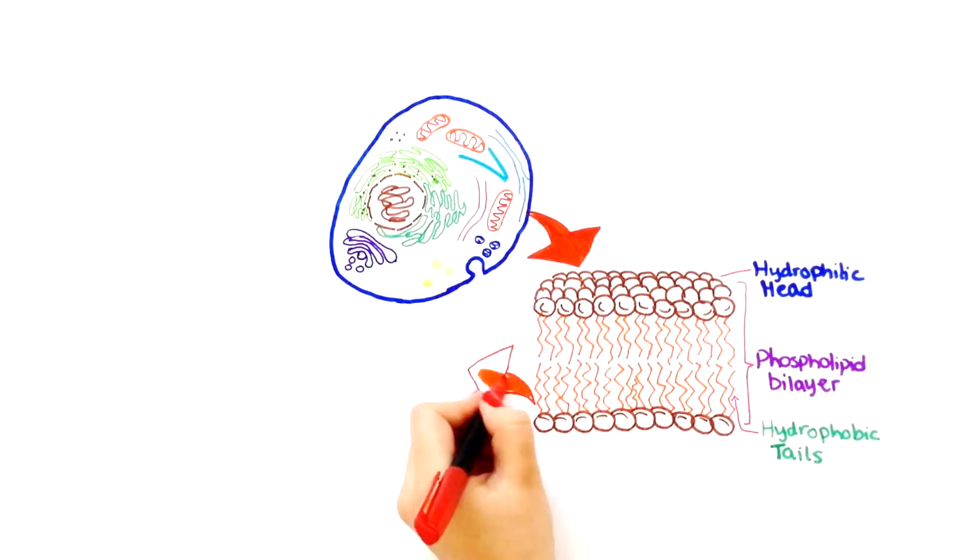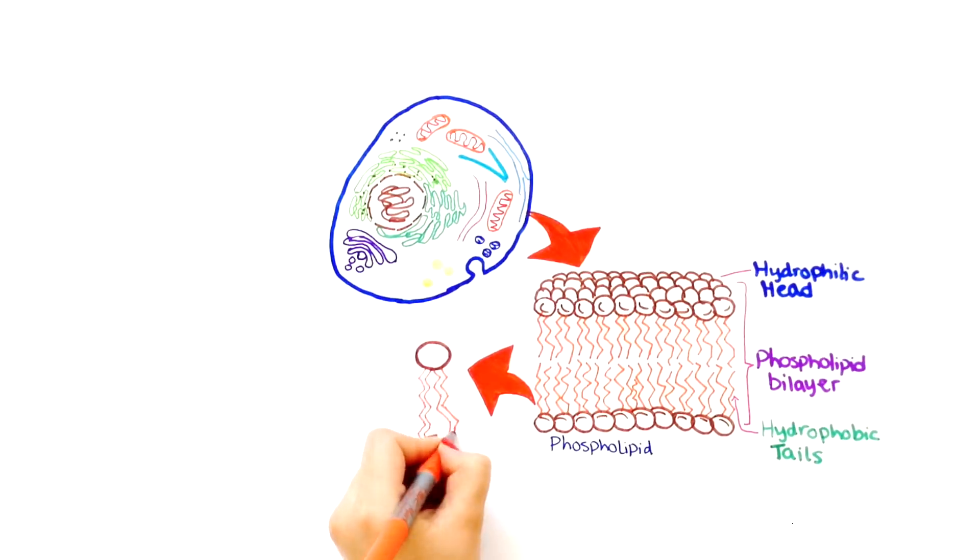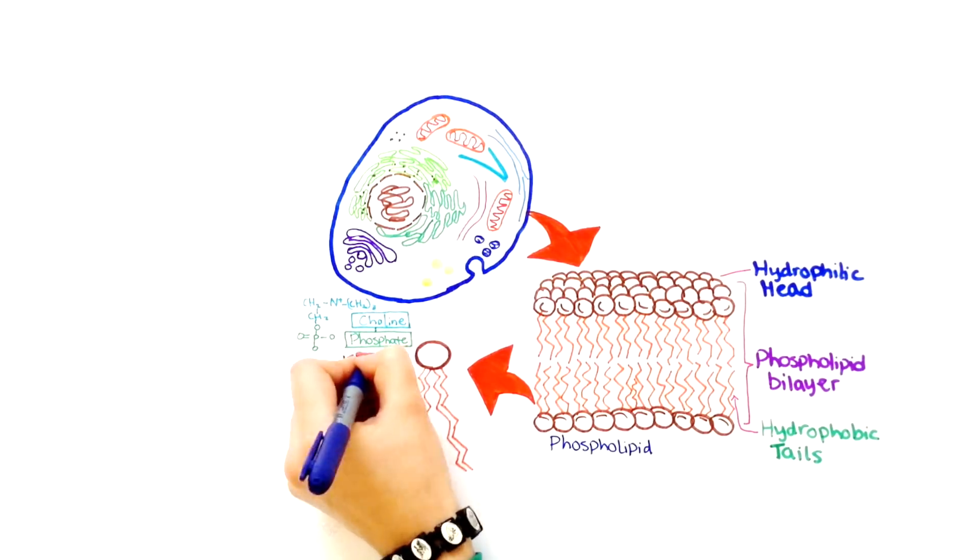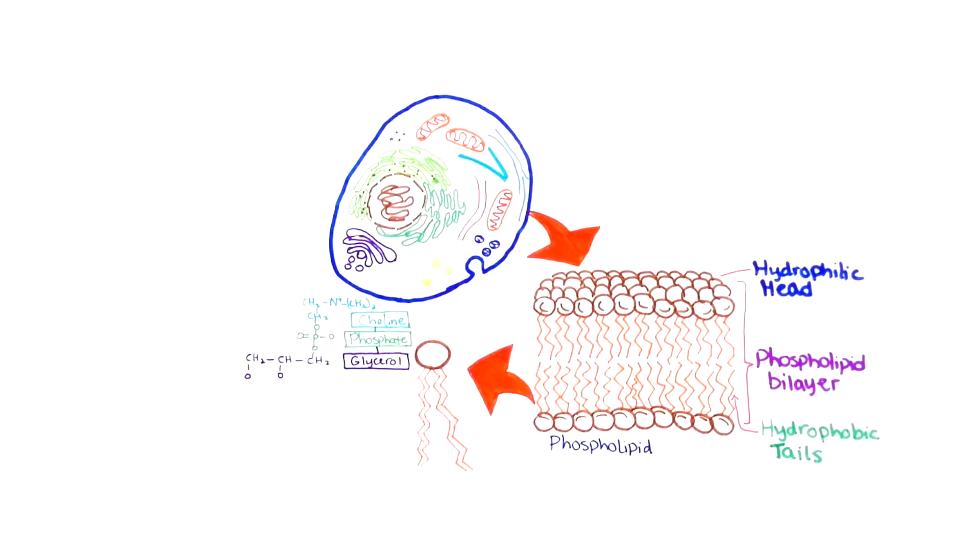Lipids are one of the major macromolecules found in living things. What makes a phospholipid different from other lipids is that it has a head that has a charge to it. The head consists of a choline, phosphate, and a glycerol group. It is the phosphate group that gives the head of the phospholipid its charge, and hence it is able to easily interact with water.